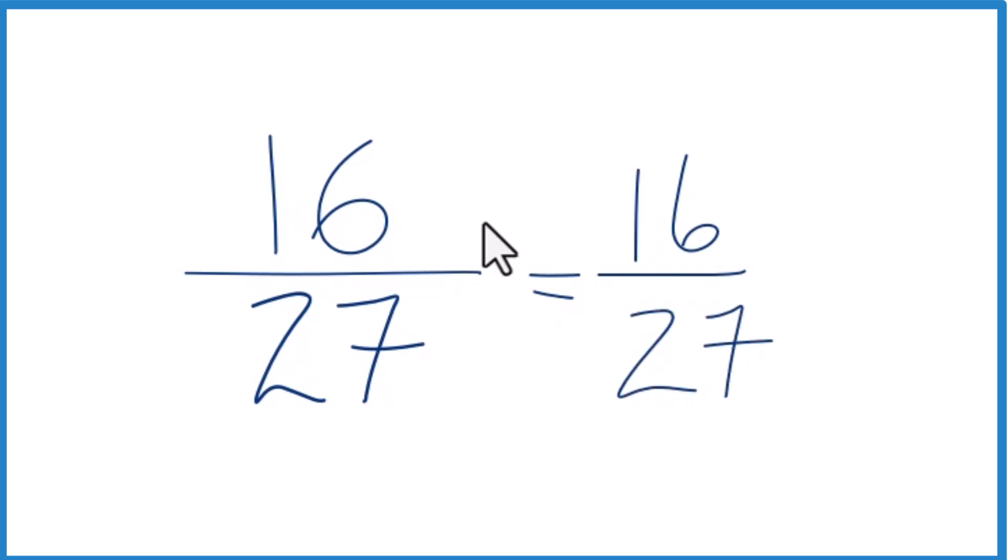What that means is that the fraction 16/27 is already simplified. We can't reduce or simplify this any further.